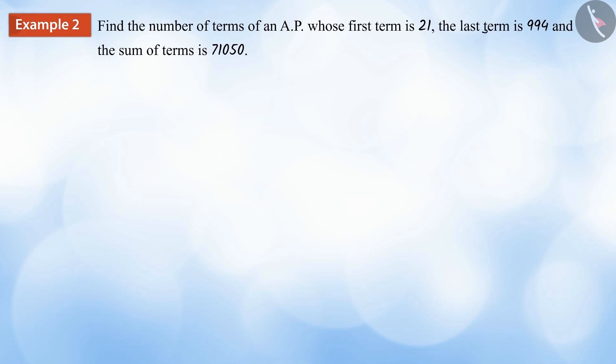Let's look at another example. Find the number of terms of an arithmetic progression whose first term is 21 and the last term is 994 and the sum of terms is 71,050.